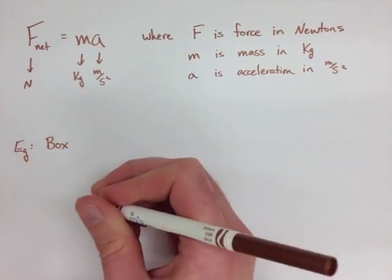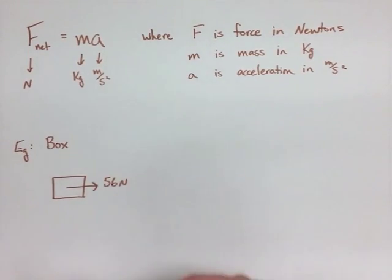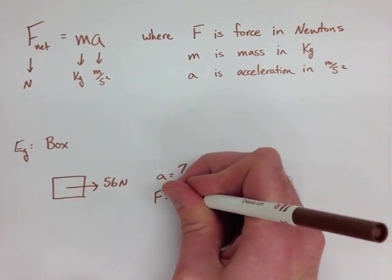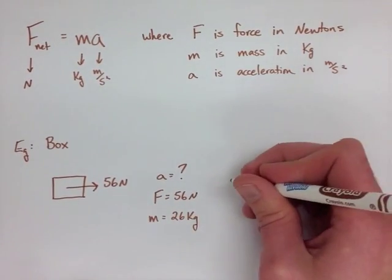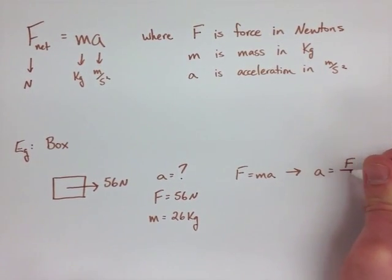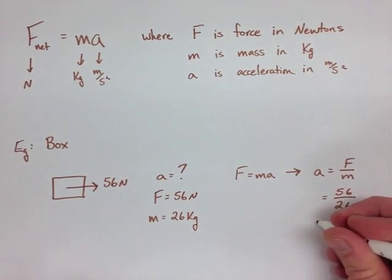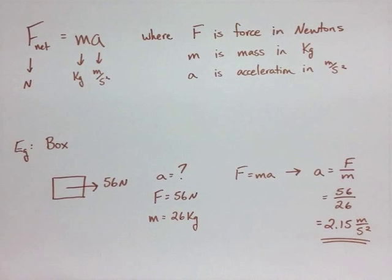If we look at our example where we have a box with an applied force of 56 newtons. To find the acceleration, we use our force of 56 newtons. We know that the box is 26 kilograms, so we have force equals MA, and we rearrange to find that A equals F over M. We substitute and solve and get our acceleration to be 2.15 meters per second squared.